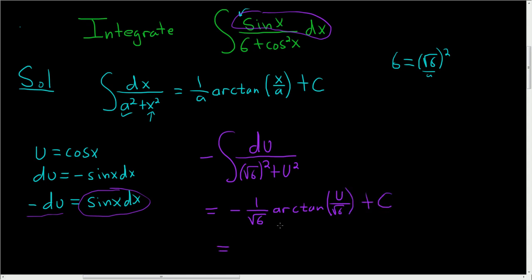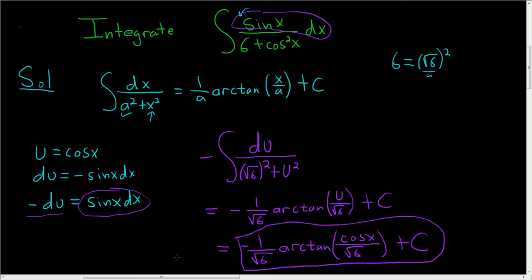To finish, we'll just replace u with cosine x. So this is negative 1 over the square root of 6, arc tan. And then we said u was cosine x, so this is cosine x divided by the square root of 6, plus our constant, c. And that is the final answer. I hope that made sense.